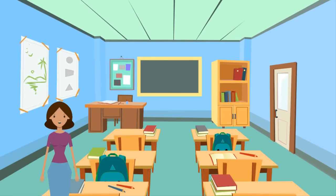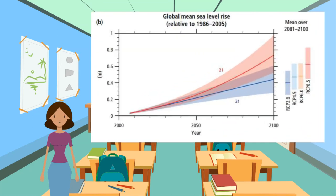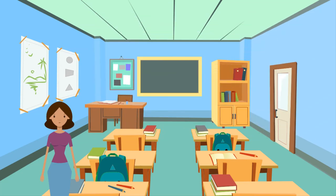Finally, sea level rise is estimated to be between 30 centimeters and 1 meter, due to two reasons: melt water from ice sheets and glaciers adding more water to the ocean, and thermal expansion as the sea gets hotter and takes up more space. Climate scientists cannot predict exactly how the climate will change because there are many physical and human influences — there is much uncertainty around these projections, as we can't say for sure how the population and the earth's systems will respond to climate change in the future.